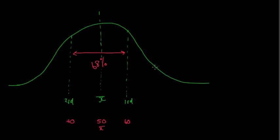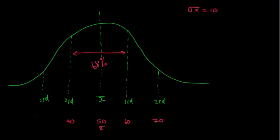Now, if we go a little bit further out — let's say to two standard deviations away from the mean. We looked at a standard deviation of 10 in the first example, so two standard deviations would be 20 marks above, which would make it 70, and 20 marks below, which would make it 30. And what we actually say is that 95% of all scores lie within two standard deviations of the mean.